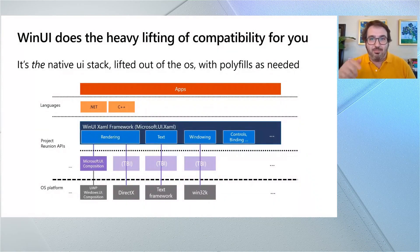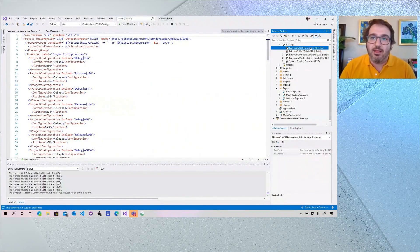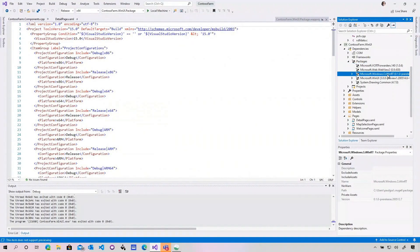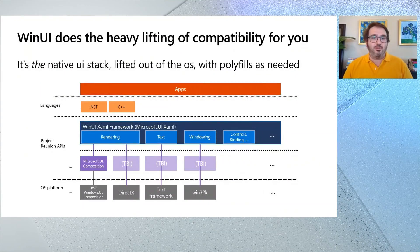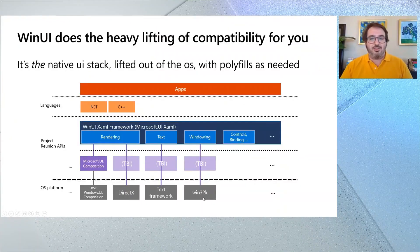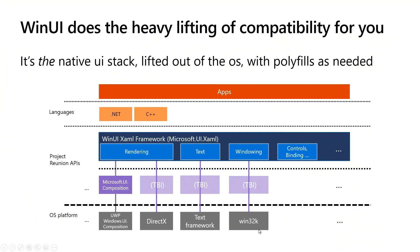Under the covers, in some cases we're lifting things entirely out of the OS — like the composition engine. In other cases, there are things more pedal-to-the-metal like Win32k.sys that just plumb through, or where a polyfill is needed to work across OS versions. So that's the idea. We're doing a lot of the heavy lifting for you in backward compatibility using polyfills where needed, so it's simple for you — just write against the APIs of Project Reunion components like WinUI.